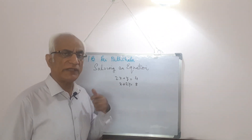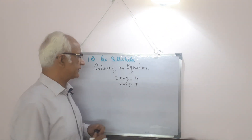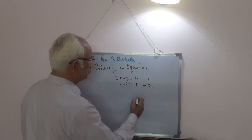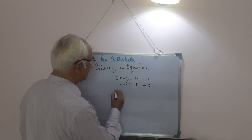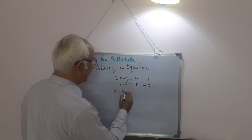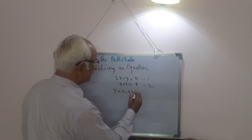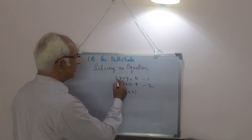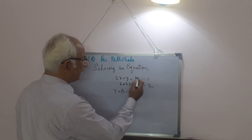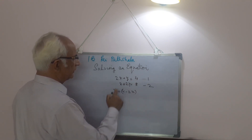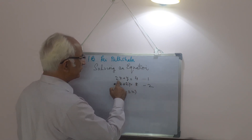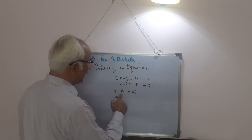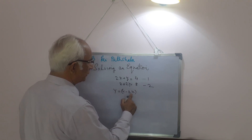Our approach is that from one equation we will find the value of one variable in terms of the second. For example, this is equation number one and this is equation number two. From equation one, y is equal to 4 minus 2x. We found this by transposing 2x to the right-hand side — it was being added, so now it will be subtracted.